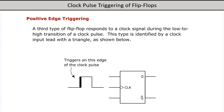Positive edge triggering: a third type of flip-flop responds to a clock signal during the low to high transition of a clock pulse. This type is identified by a clock input lead with a triangle, as shown below.